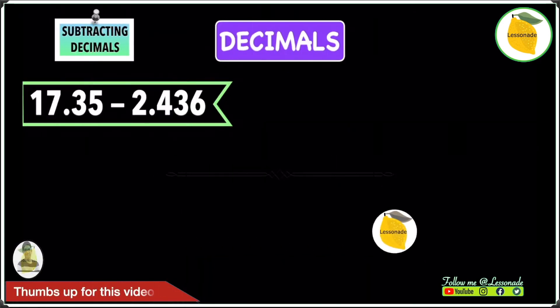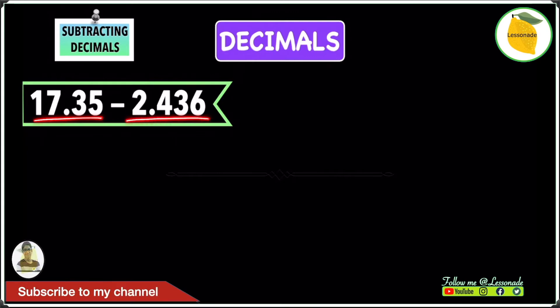Now let's have a look at another subtracting decimals example. The example we have this time is 17.35 minus 2.436. Once again we're going to do this as we did with the previous question and we're going to make sure the decimal points are lined up.